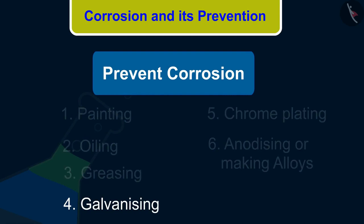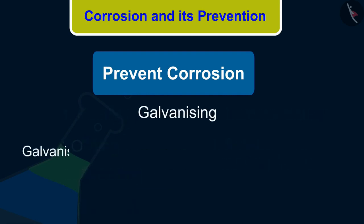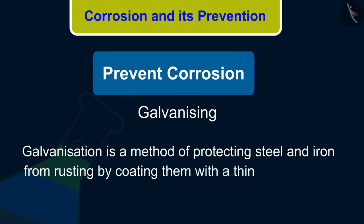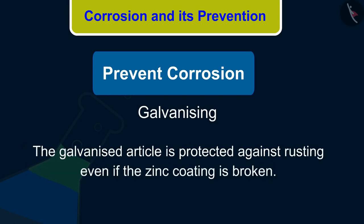What is galvanizing? Galvanization is a method of protecting steel and iron from rusting by coating them with a thin layer of zinc. The galvanized article is protected against rusting even if the zinc coating is broken.